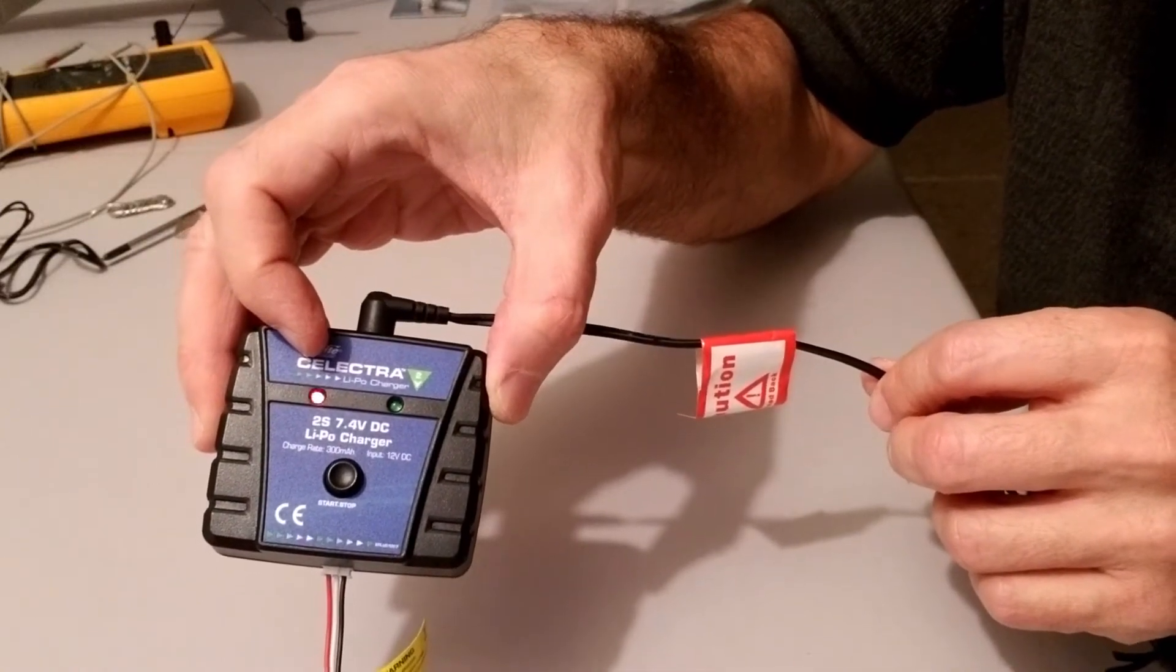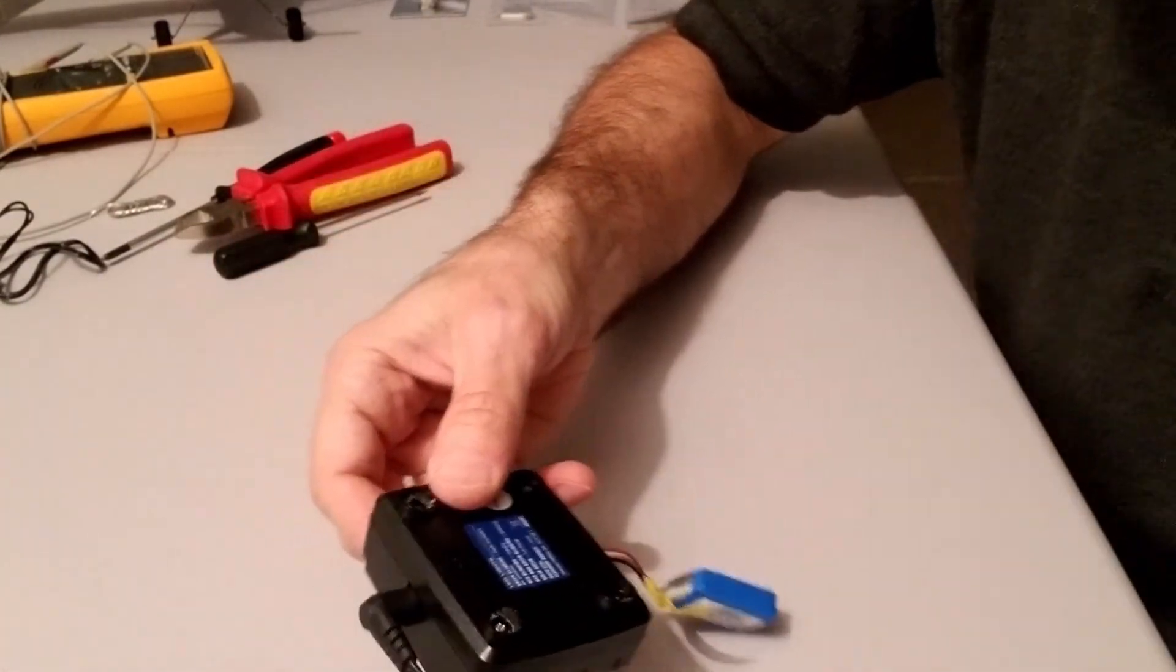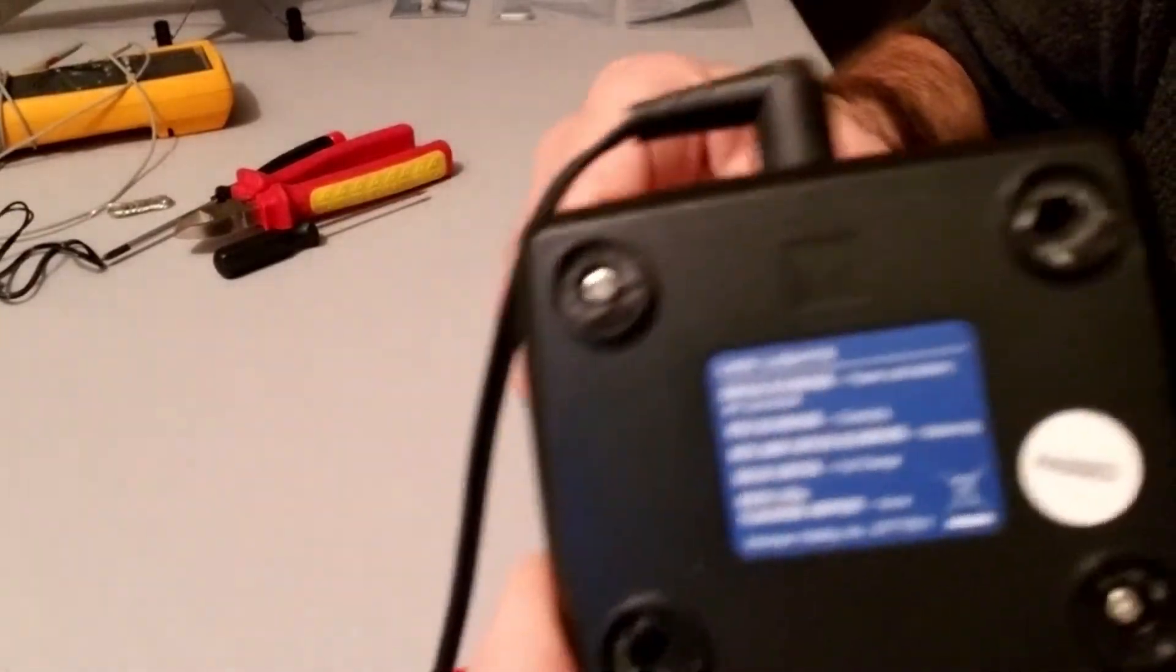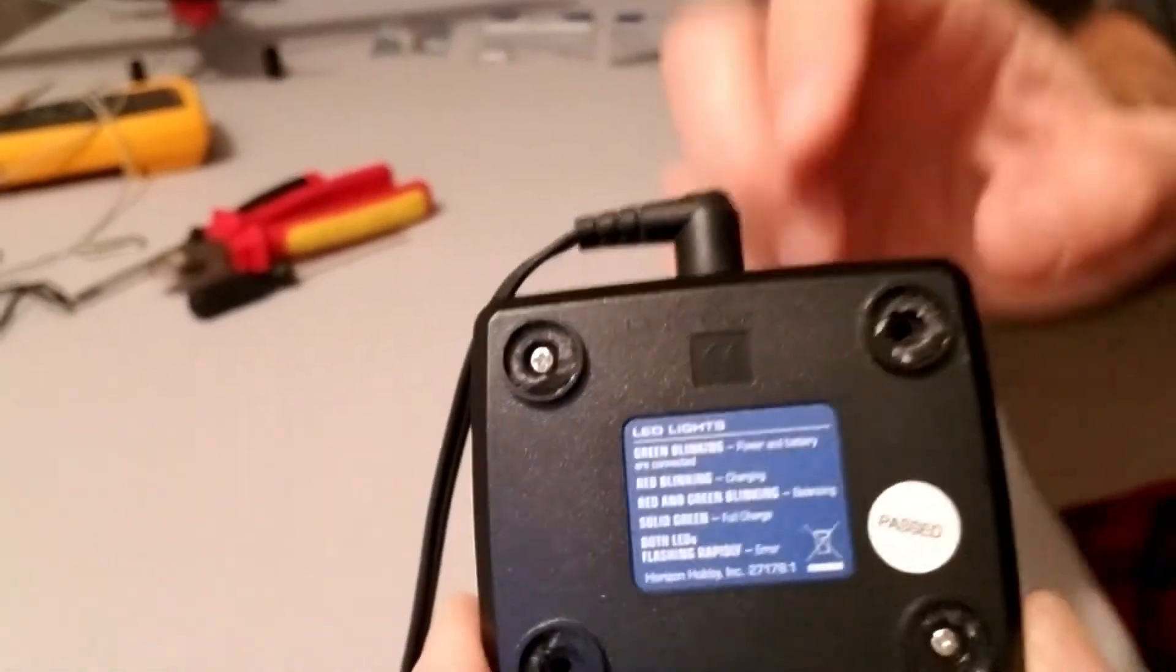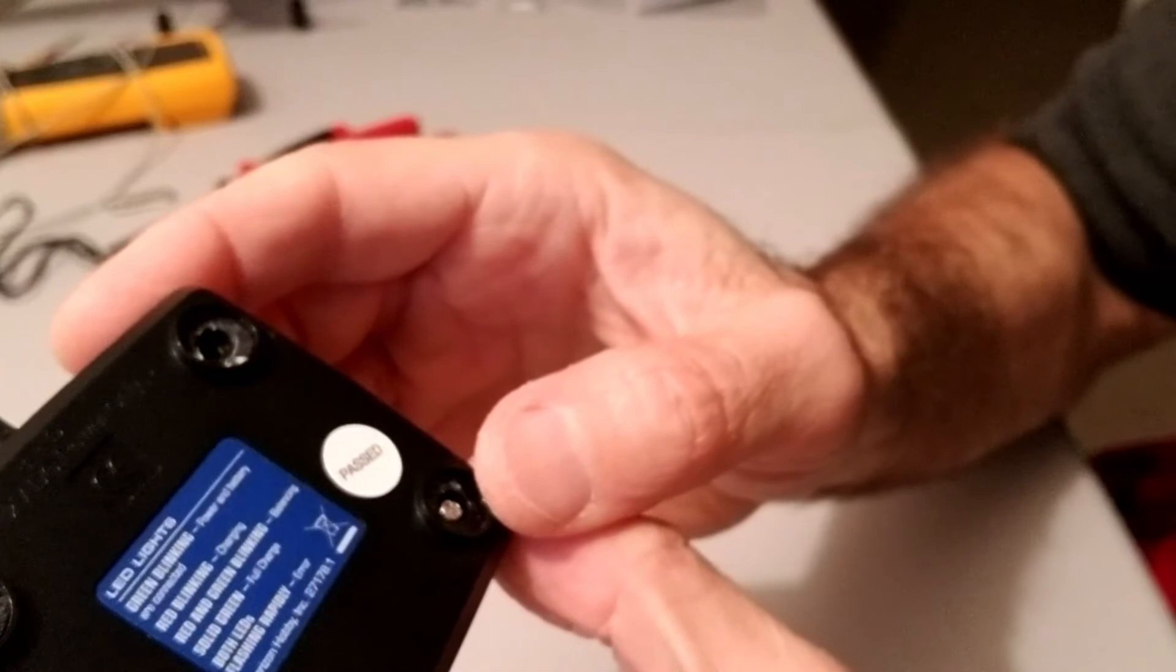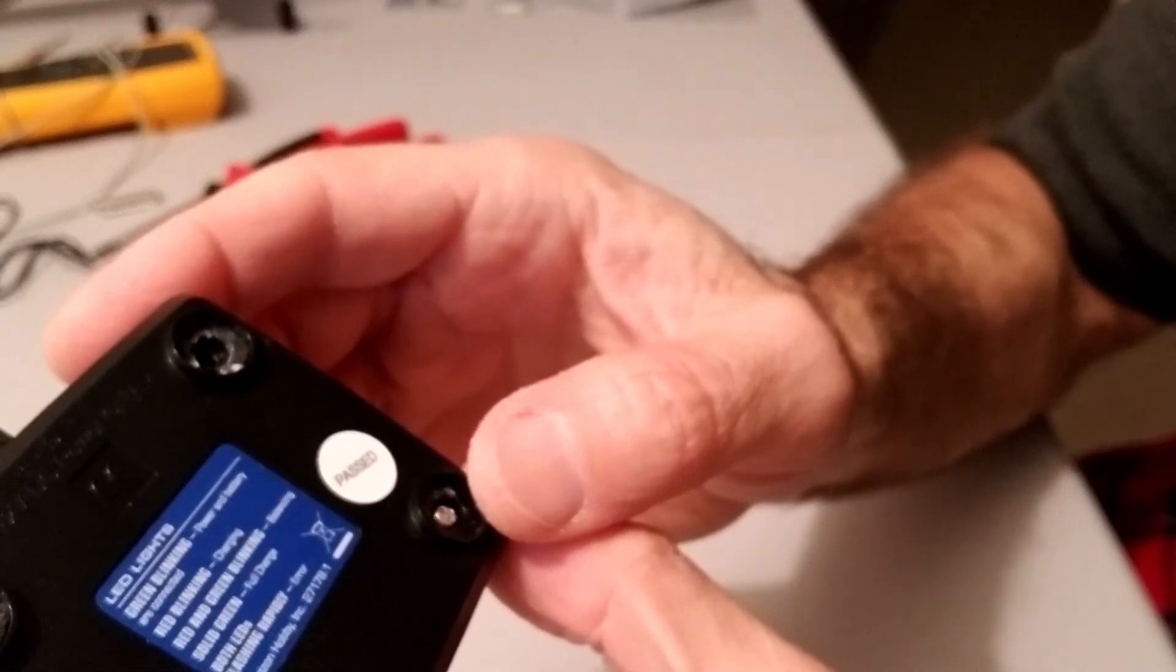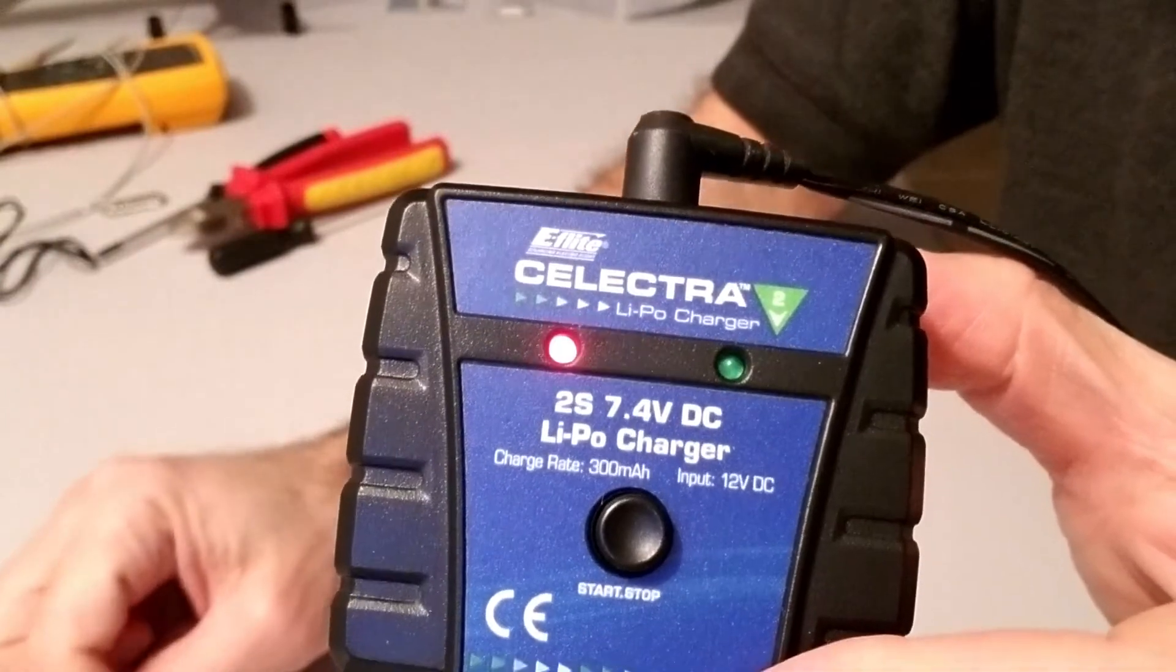Let's see if that's correct, it should say something on the back. I don't know if you can see it but it says green blinking, power and battery are connected. Red blinking, charging. Red and green blinking, balancing. Solid green, full charge. Both LEDs flashing rapidly, error. Looks like it is working. The red LED is blinking, so it is charging.